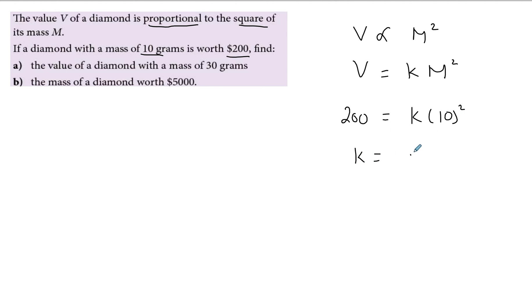And this way I can find K. So K would be equal to 200 divided by 100, and so K is equal to 2. So I have that V is equal to 2M squared. And using this, I can solve both parts.